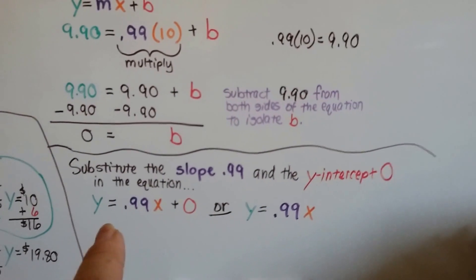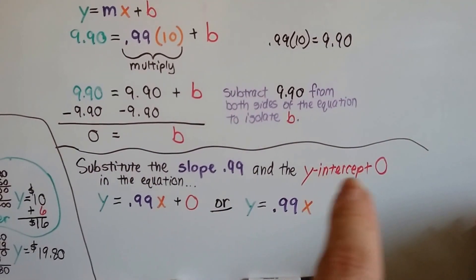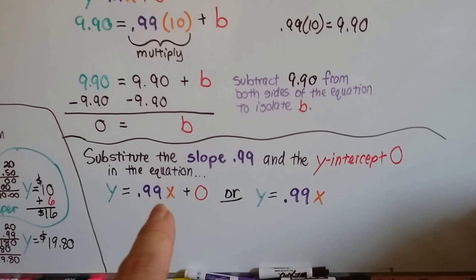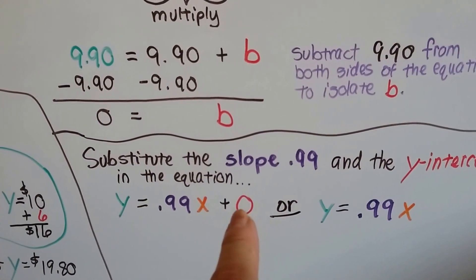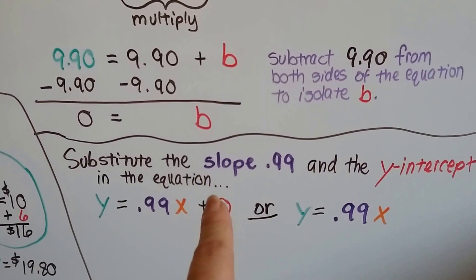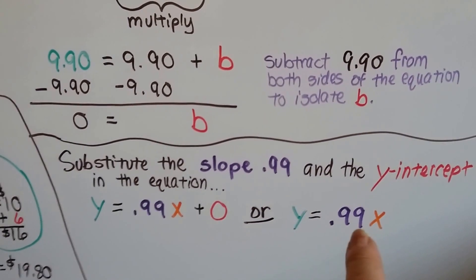Do you remember what happens when the y-intercept b is a zero? We substitute the slope, .99, and that y-intercept zero into the equation, and we have y equals .99x plus zero, or we don't need to write that zero. We could just say y equals .99x.